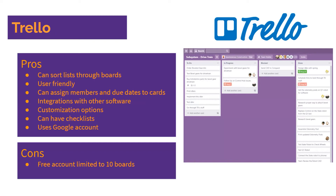Trello lets you sort lists through boards, with boards organized by different topics — we set ours up by subsystem. It's very user-friendly and easy to navigate. You can assign team members and due dates to each card so people are notified when something needs to get done. It works well with other software like Slack, and you can add checklists to cards to track progress. It only requires a Google account. The main downside is you can only have 10 boards on the free plan; upgrades start at $9.99 per month.